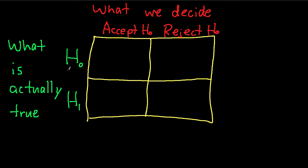So clearly, if h0 is actually true, and we accept h0 as being true, then our decision is correct. Similarly, if h1 is true, and our decision is to reject h0, in other words, accept h1 as being true, then again, our decision is correct.